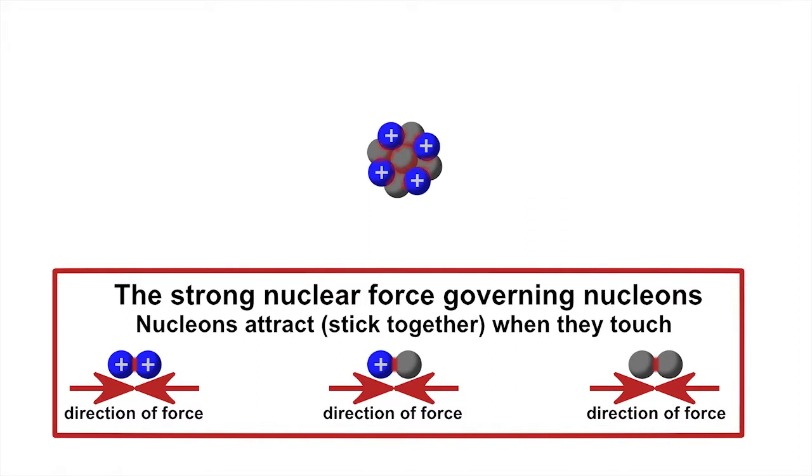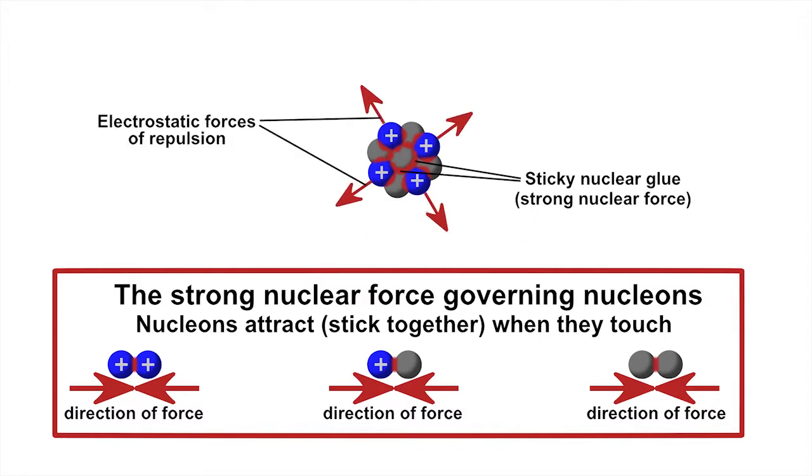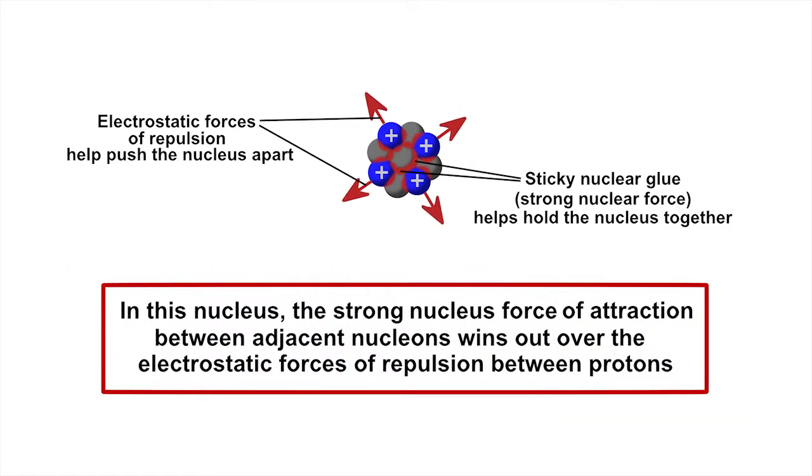Neutrons have no charge, so by adding some of them to a nucleus containing protons, they contribute the sticky nuclear glue to bind adjacent nucleons together in the nucleus, without contributing to the electrostatic forces of repulsion pushing the protons apart. Or to put it differently, they allow the strong nuclear forces of attraction between nucleons that are in close proximity to win out over the electrostatic forces of repulsion between positively charged protons in the nucleus.